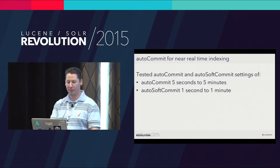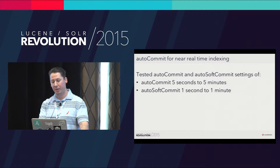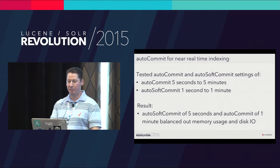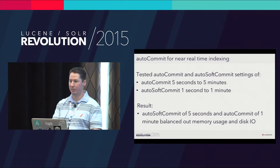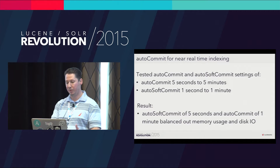For real-time indexing, we leveraged auto-commit functionality. We tested auto-commit settings between five seconds and five minutes, and auto soft-commit between one second and one minute, trying to balance memory usage versus disk IO while maintaining high performance without impacting reads or running the JVM out of memory. The sweet spot for us was five seconds for auto soft-commit and one minute for auto-commit. This worked really well.